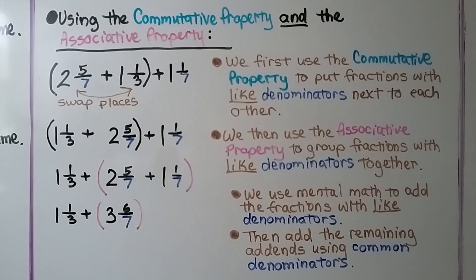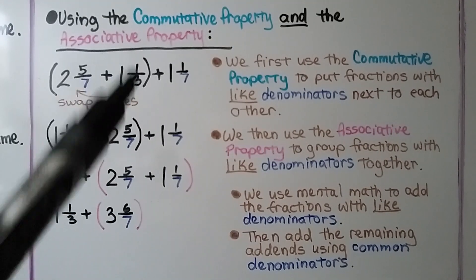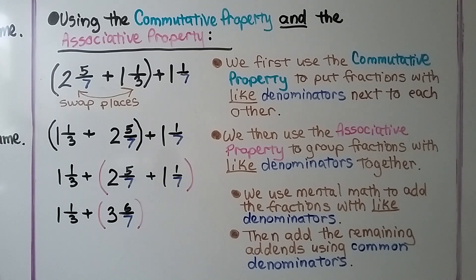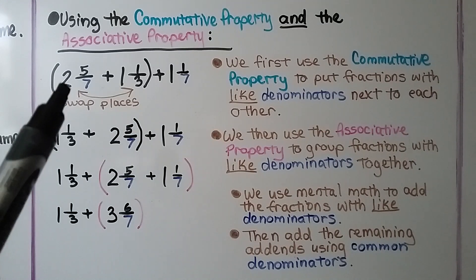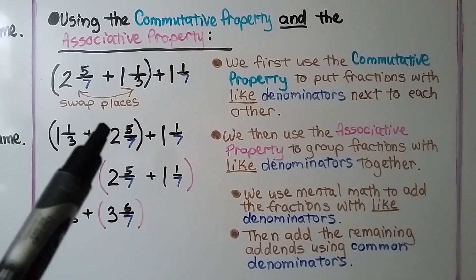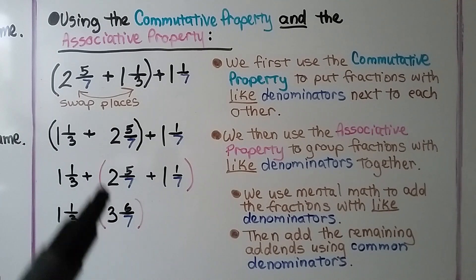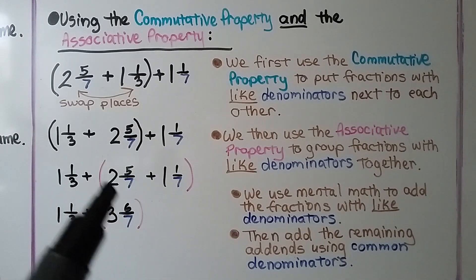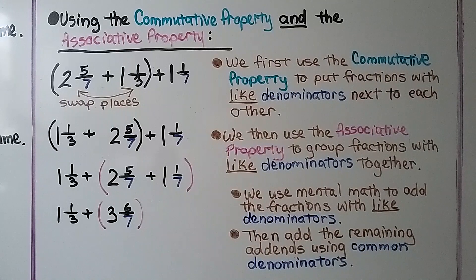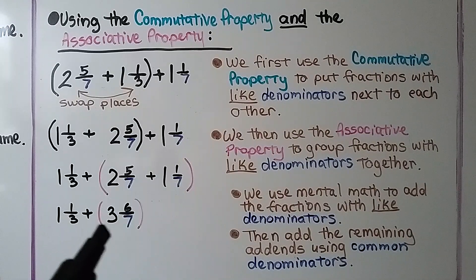Using the commutative and associative properties together: we have 2 and 5 sevenths plus 1 and 1 third in parentheses, and then we need to add 1 and 1 seventh. We first use the commutative property to put fractions with like denominators next to each other — the addends swap places. Then we use the associative property to group fractions with like denominators, moving the parentheses around 2 and 5 sevenths and 1 and 1 seventh, since they both have a denominator of 7. Using mental math, 5 sevenths plus 1 seventh is 6 sevenths, so we have 3 and 6 sevenths.